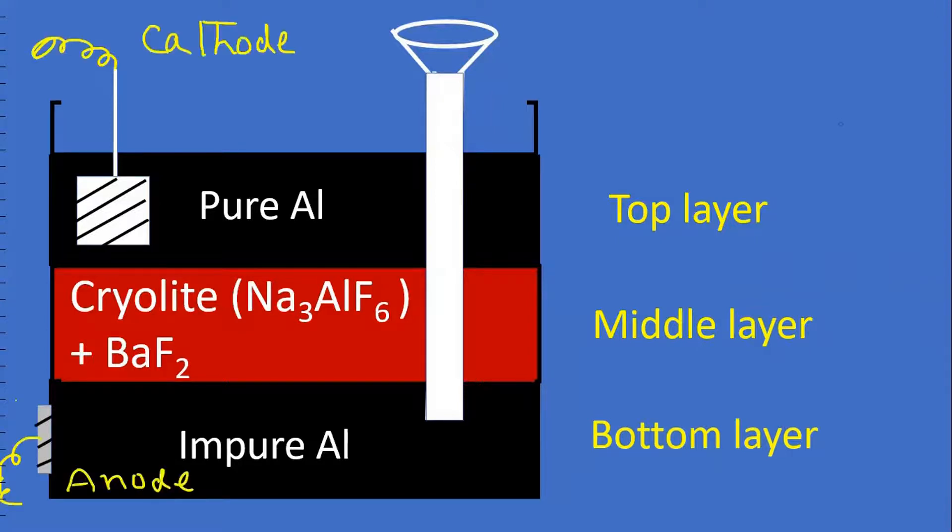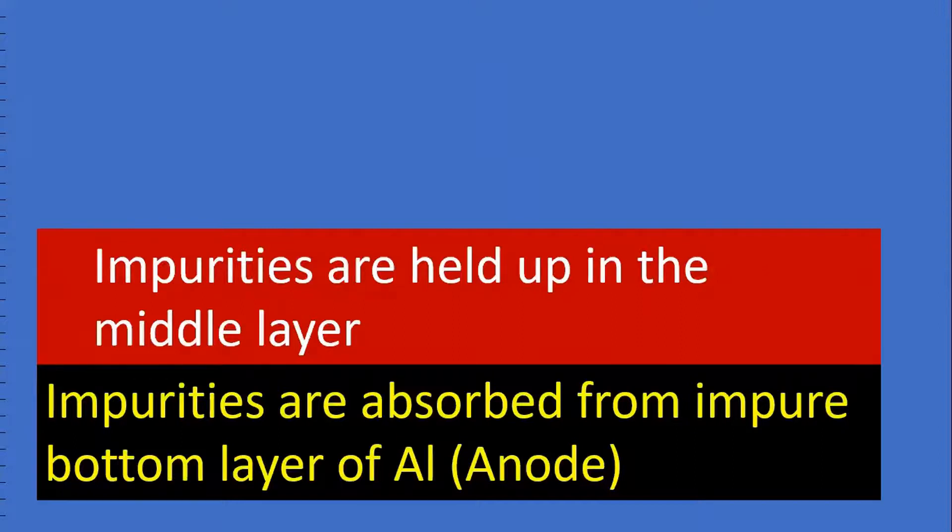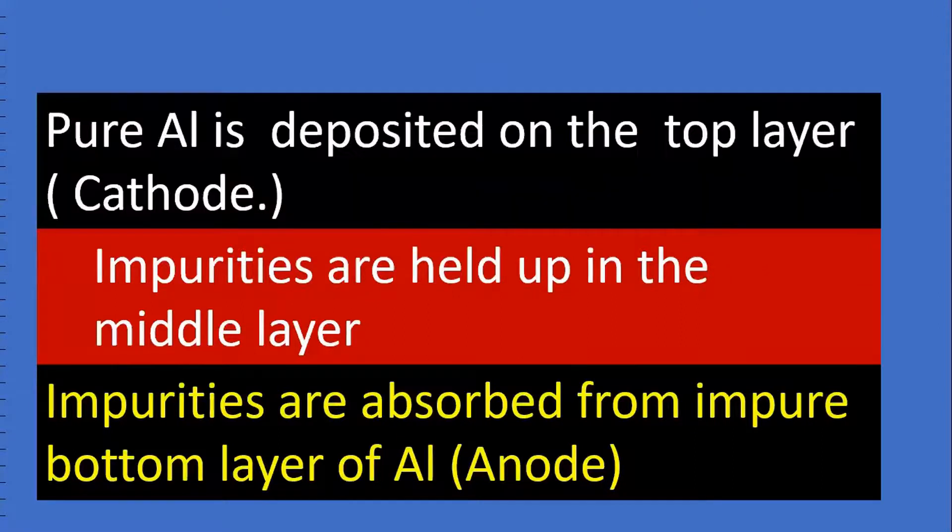When electrolysis is carried out, what happens? Impurities are absorbed from the impure bottom layer of aluminum, the anode. Impurities are held up in the middle layer. Pure aluminum metal is deposited on the top layer, which is the cathode.